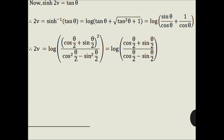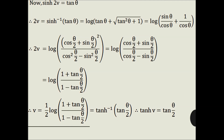Also θ = tan⁻¹(y/x), so putting the values of y and x we get tan θ = sinh 2b. Now to prove the third result: from sinh 2b = tan θ, we get 2b = sinh⁻¹(tan θ). Using sinh⁻¹ x = log(√(x² + 1) + x) and putting 1 + tan²θ = sec²θ, we get 2b = log((sin θ + 1) / cos θ). Using (cos(θ/2) + sin(θ/2))² = 1 + sin θ and cos θ = cos²(θ/2) − sin²(θ/2), we simplify to 2b = log((cos(θ/2) + sin(θ/2)) / (cos(θ/2) − sin(θ/2))). Dividing by cos(θ/2), we get 2b = log((1 + tan(θ/2)) / (1 − tan(θ/2))), so b = (1/2) · log((1 + tan(θ/2)) / (1 − tan(θ/2))) = tanh⁻¹(tan(θ/2)). Therefore tanh b = tan(θ/2), which is the required result.